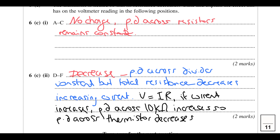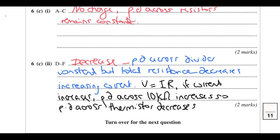In the mark scheme you can often get away with saying: as the thermistor resistance decreases, the 10 kΩ is a larger percentage of the total resistance, so it has a larger percentage of the potential difference. That finishes question six, with just question seven left.